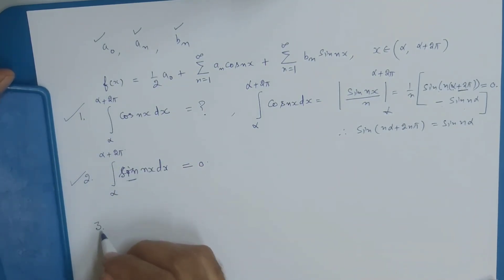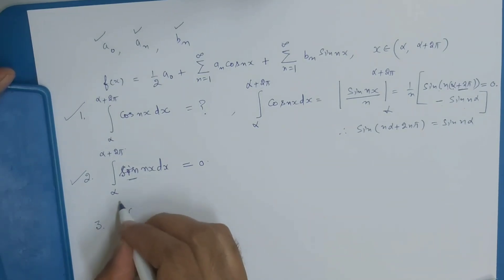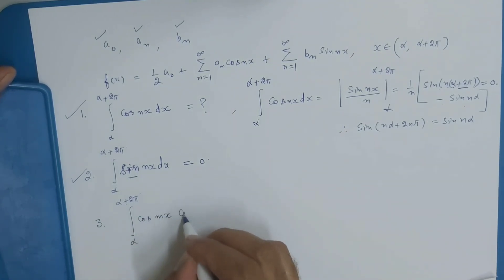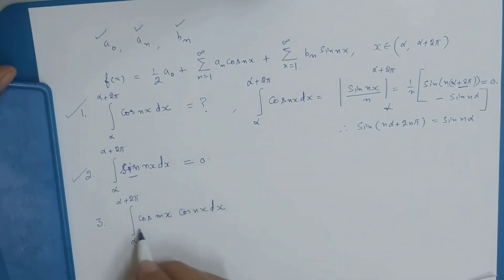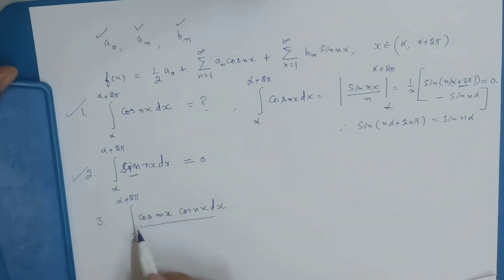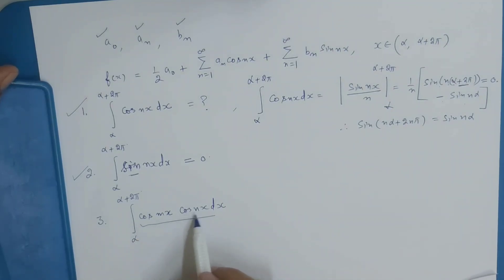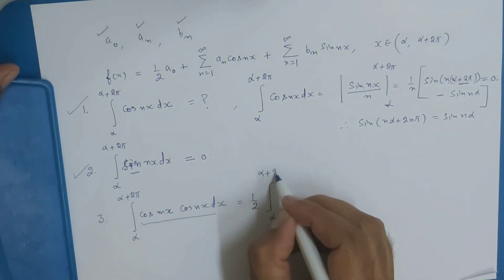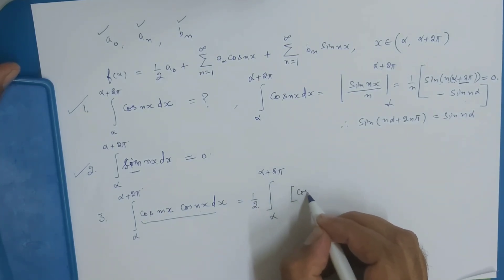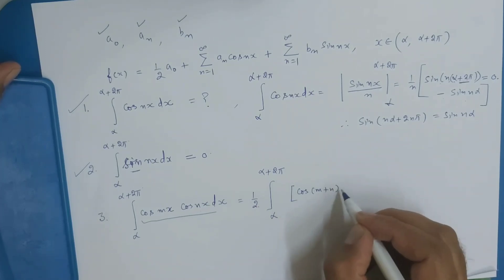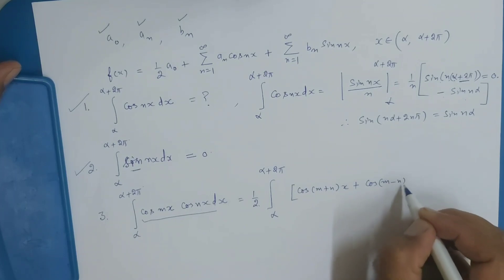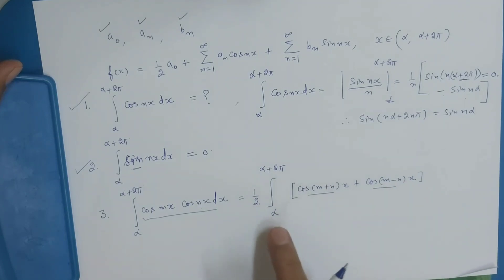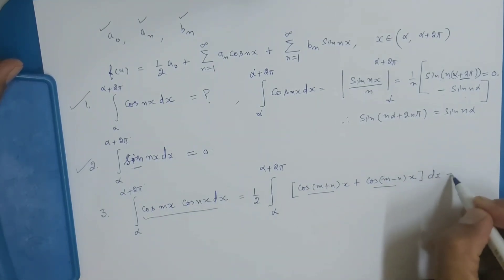Number 3: ∫[α to α+2π] cos(mx)·cos(nx) dx. इसको जब solve करेंगे, 2 से multiply और divide करेंगे; the formula becomes 2·cos(a)·cos(b) = cos(m+n)x + cos(m−n)x. So the integral equals (1/2) ∫[α to α+2π] [cos((m+n)x) + cos((m−n)x)] dx. Because cosine is periodic over the interval α to α+2π, that equals 0.